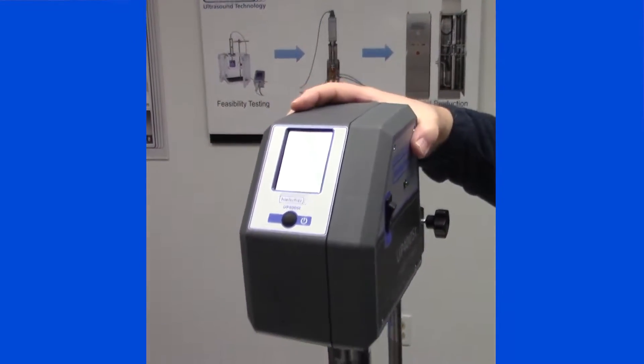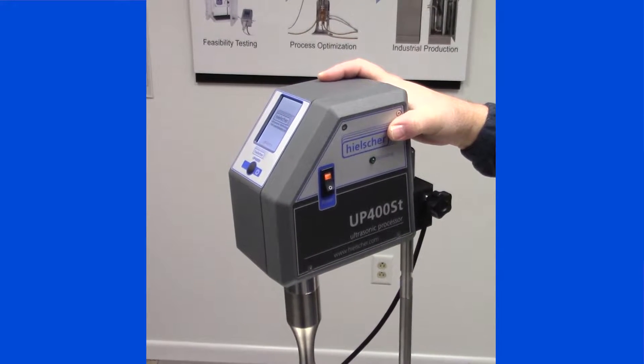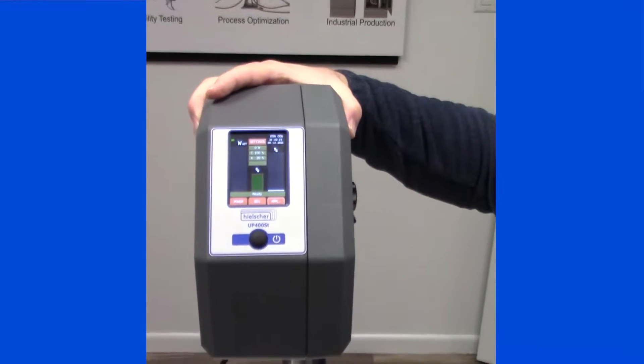On the side of the unit, we have the main power. By depressing the switch, we'll turn the unit on. There we go. And this is your main screen.